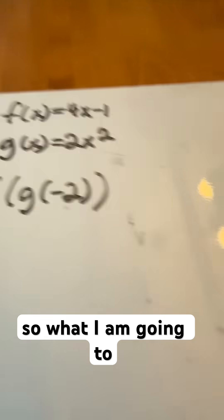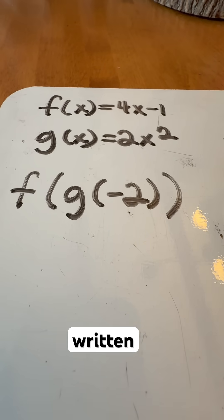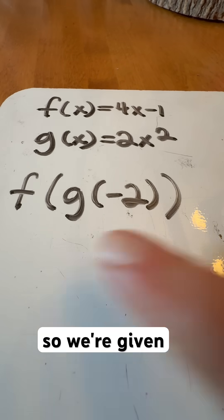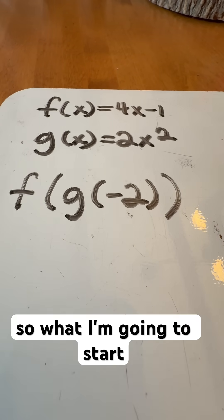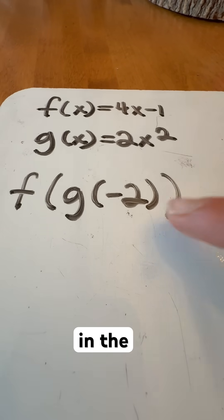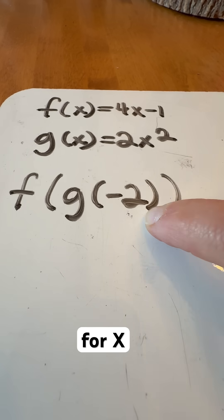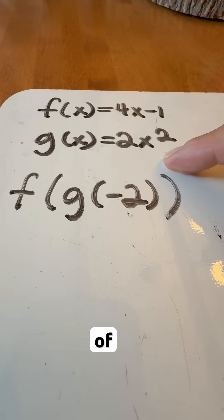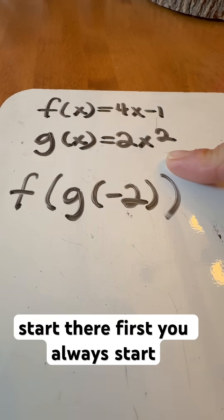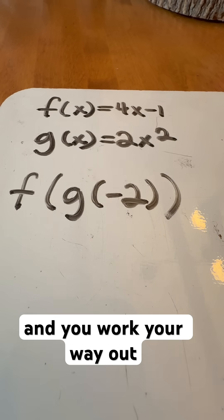So what I'm going to start off with is we have the two equations written right here. What I'm going to start with is plugging in the negative 2 here for x in the g(x) equation. We'll start there first. You always start on the inside and work your way out.